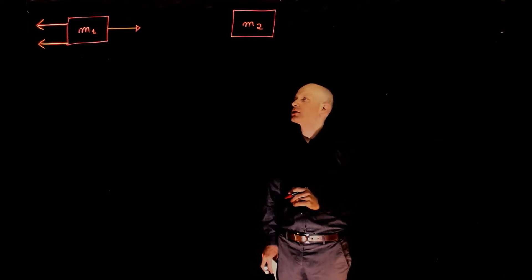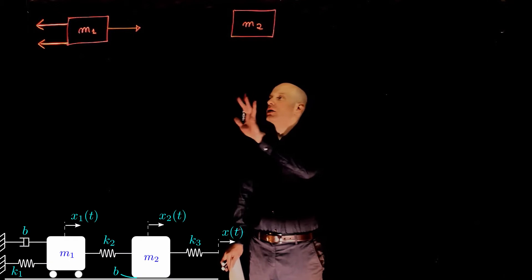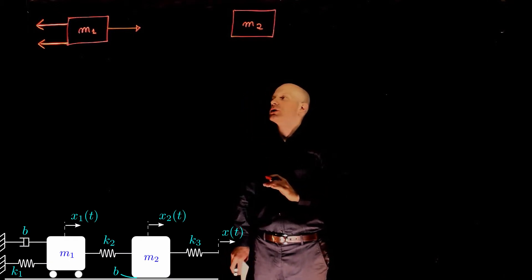Here we have another example of two masses connected through a series of springs and dampers. Let's start with the free body diagram of masses m1 and m2.